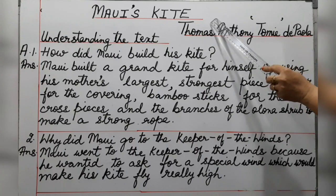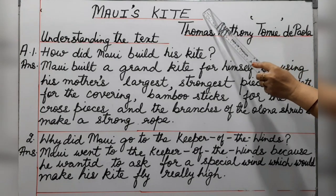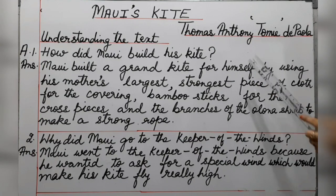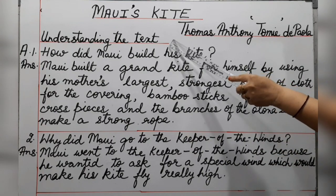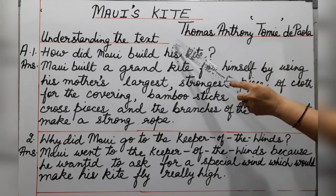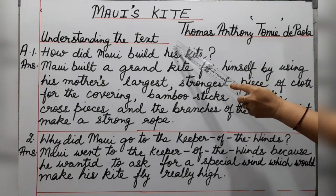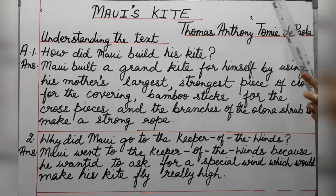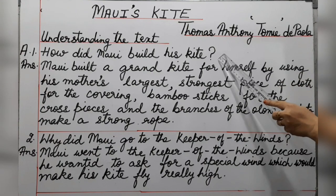Hello children, today we are doing the question answers of the chapter Maui's Kite by Thomas Anthony Tommy DePaola. We are doing the question answers under the heading 'Understanding the Text'. On the basis of your understanding of the chapter, you have to answer these questions. I have already explained the story in my previous video with the help of pictures so that you can understand the story. So let's begin with question number 1.